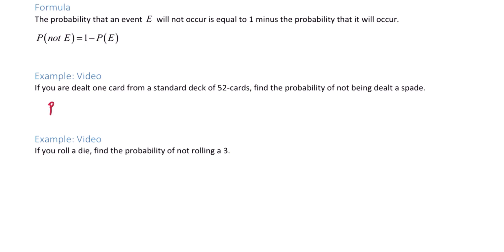The probability of not being dealt a spade is equal to 1 minus the probability that you are dealt a spade. So we have 1 minus the probability of being dealt a spade, and there are 13 out of 52 cards.